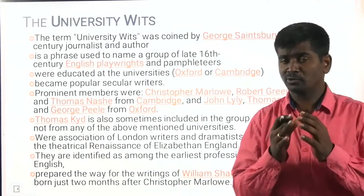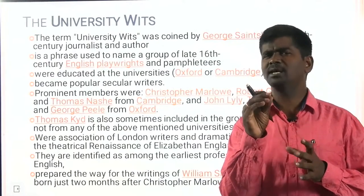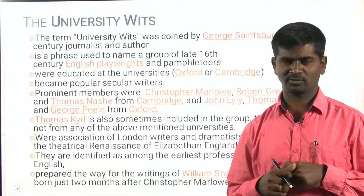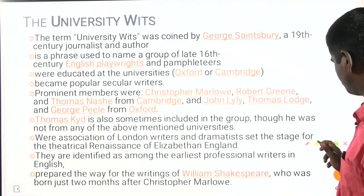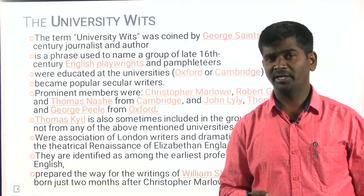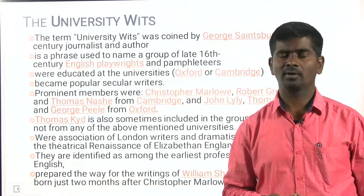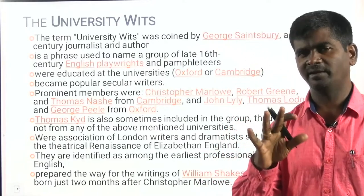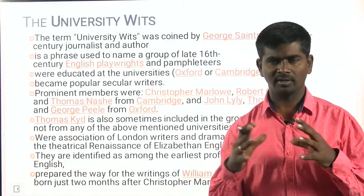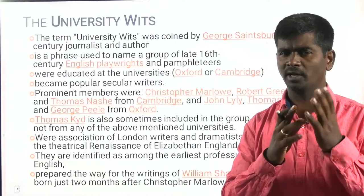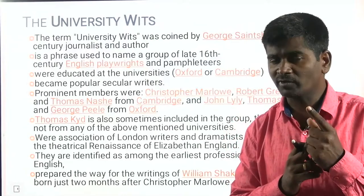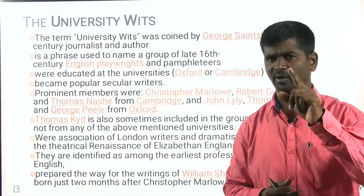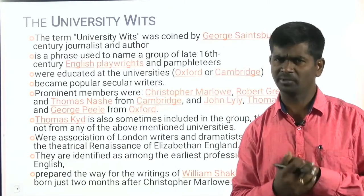I am giving you short descriptions with regard to some examination-oriented aspects. University Wits — who are the University Wits? Robert Greene, John Lyly, Thomas Kyd, Thomas Nashe, Thomas Lodge, George Peele, and Christopher Marlowe — seven. These are considered to be the University Wits. They were all intellectuals, graduates and post-graduates from Oxford and Cambridge University, where they formed a group together. They wrote literature only in blank verse, only in heroic style, and a lot of tragedies. The term 'University Wits' was coined by George Saintsbury, a 19th-century journalist and author.